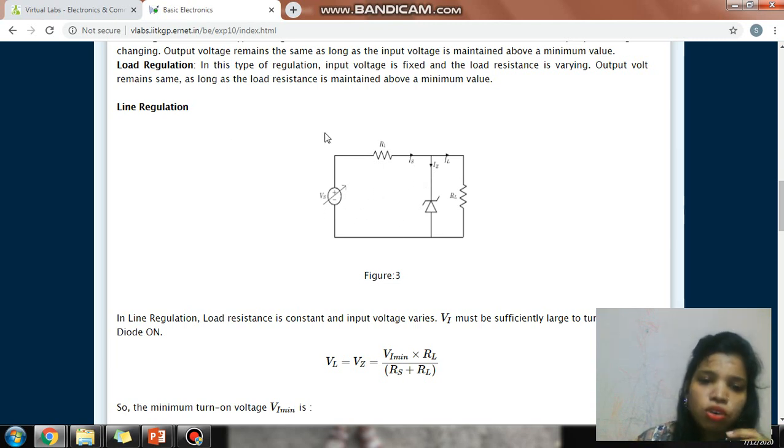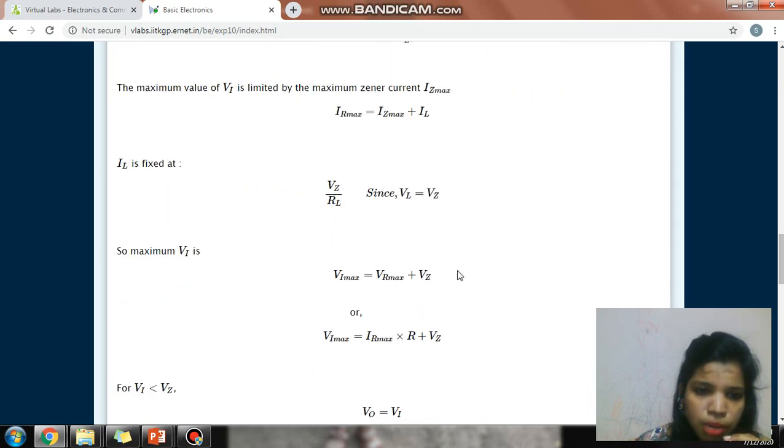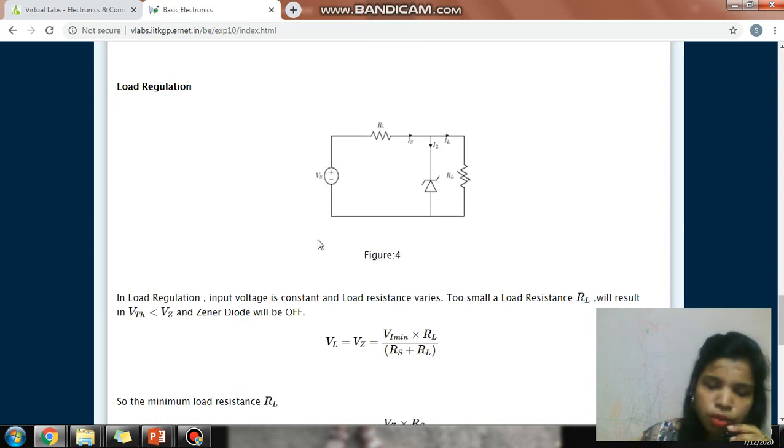The application of the Zener diode is as a voltage regulator, means voltage across it will be constant irrespective of the variation in input voltage. There are two types of regulation: line regulation and load regulation. Line regulation means the source resistance is fixed, load resistance is fixed, and we are varying the supply voltage and noting the Zener voltage. Load regulation means the input is fixed, source resistance is fixed, and we are varying the load resistance.